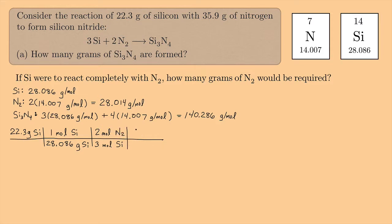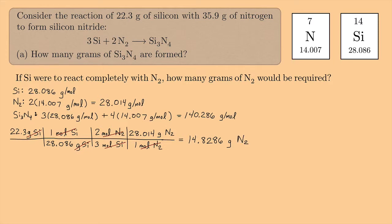Now I want to go back to grams, so I'm going to use 28.014 — that's going to go upstairs: 28.014 grams of nitrogen is equivalent to 1 mole of nitrogen. Let's make sure everything cancels: grams of Si cancel, moles of Si cancel, moles of N₂ cancel, and I'm left with grams of N₂. If you do this on a calculator, you end up getting 14.8286 grams of nitrogen — I just multiplied 22.3 times 2 times 28.014 divided by 28.086 times 3.